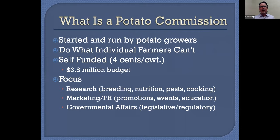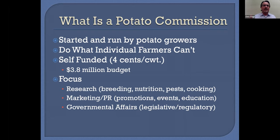A potato commission is one of several agricultural commodity commissions located in Washington State. These are all self-funded organizations. Essentially the potato growers went to the legislature back in 1956 and said: create an organization that will help us do things for our farms and industry that we can't do for ourselves. If all potato growers kick in a little bit of money, we can pay for research together, or jointly promote Washington potatoes. The legislature created the potato commission, with mandatory taxing authority — four cents per hundred pounds of potatoes grown, which works out to about $3.8 million in budget.